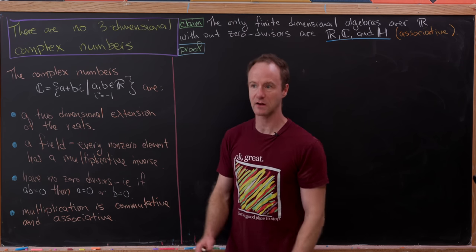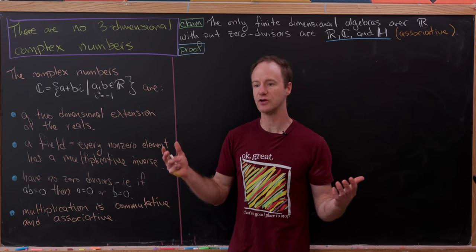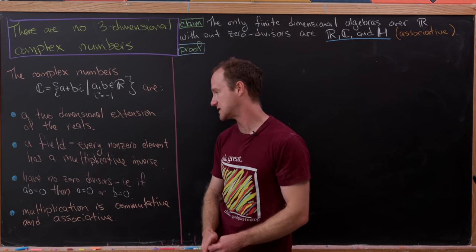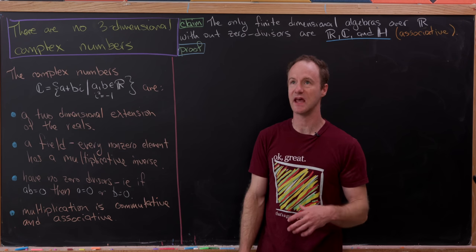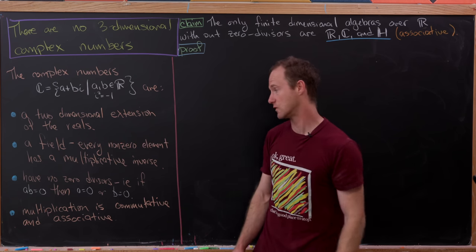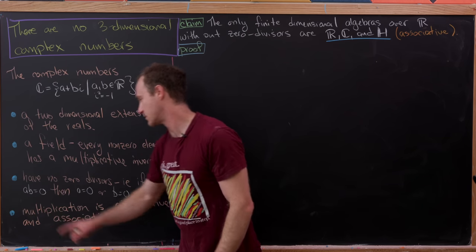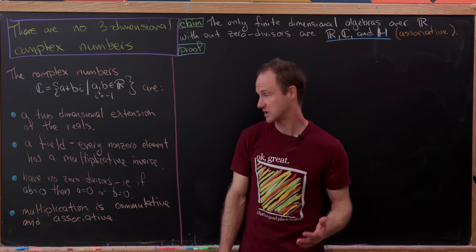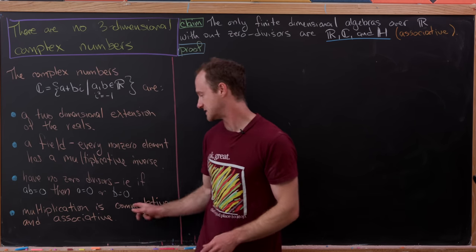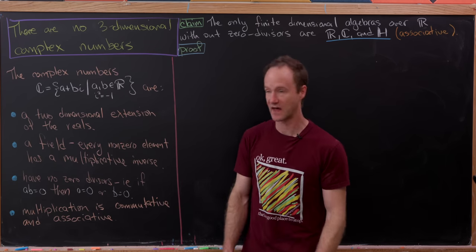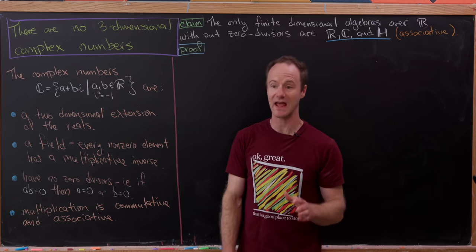By a field I mean a mathematical object where multiplication and addition work in a way that's fairly similar to how you think it should work. In particular, every non-zero element has a multiplicative inverse. A weaker condition is that the complex numbers does not have zero divisors — a zero divisor is a number such that if you multiply it by another number and get zero, one of them may not be zero originally. So saying there are no zero divisors means if a times b is zero then a is zero or b is zero. Another property is that multiplication is commutative and associative.